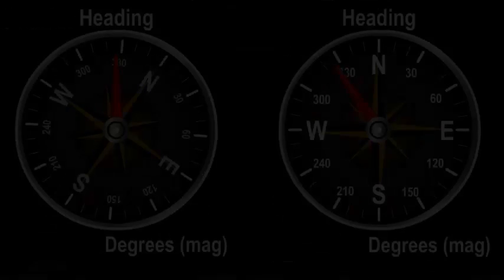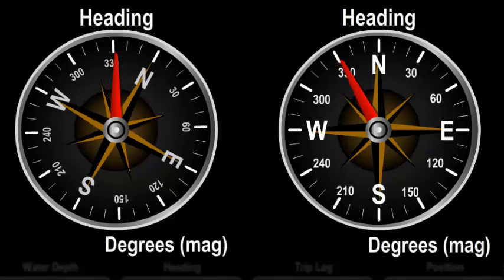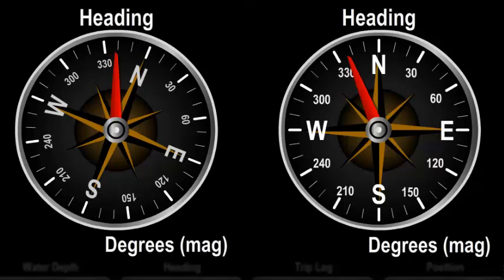Other components include the head-up rose and the north-up rose, which can be used to display values like bearing to waypoint, course over ground, or ground wind direction.